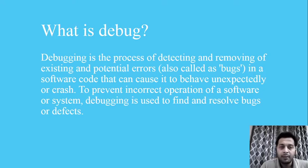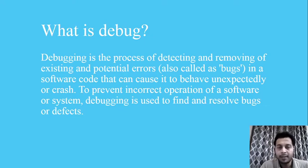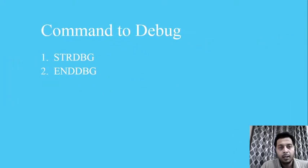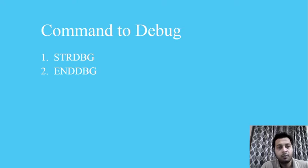We identify and fix the bug with the help of debug. This is a debugging practice we need to do after development for unit testing so we can fully confirm that our program has no bugs. The commands basically used are: start debug when we start the debug, and end debug when we want to end. These are the two basic commands we use here for debugging the code.